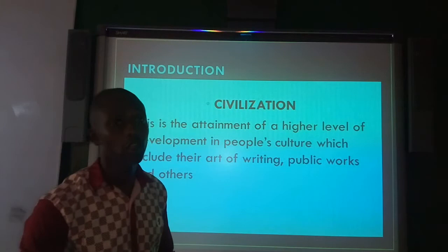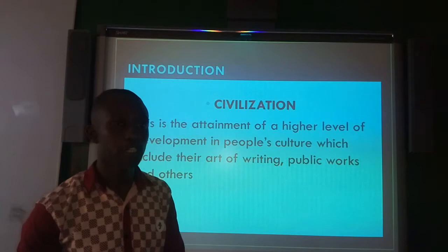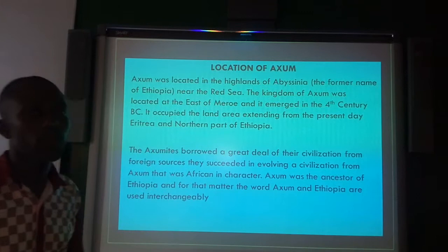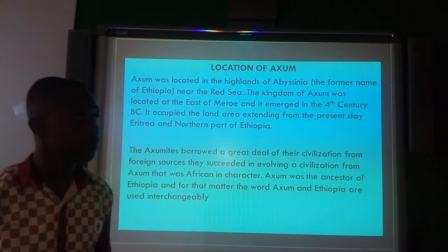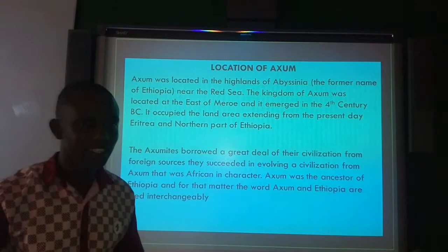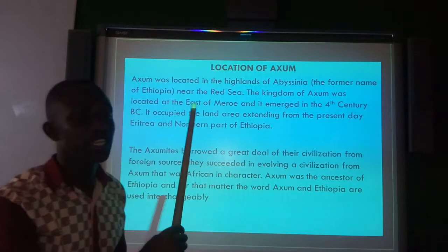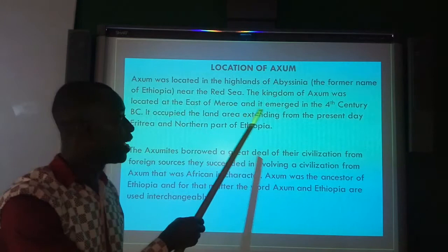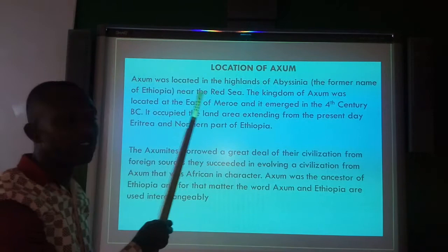Now let us locate where Aksum is. Aksum was located at the Highlands of Abyssinia, the former name of Ethiopia, near the Red Sea. That is where Aksum can be found — the Highlands of Abyssinia, near the Red Sea.